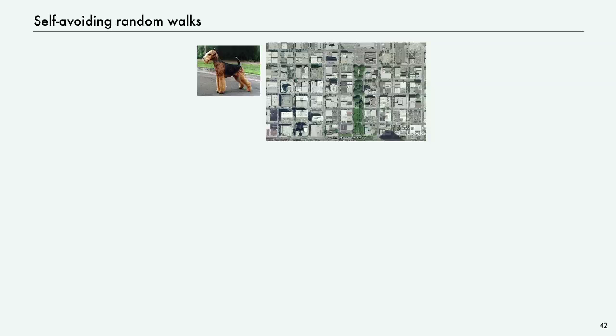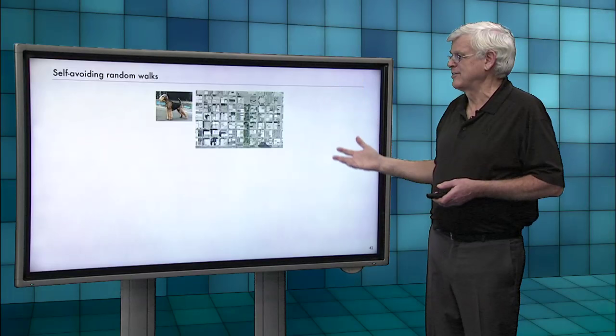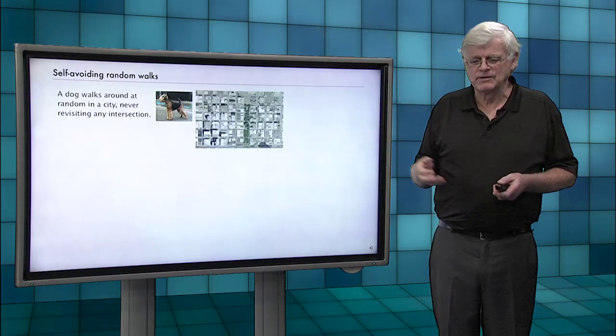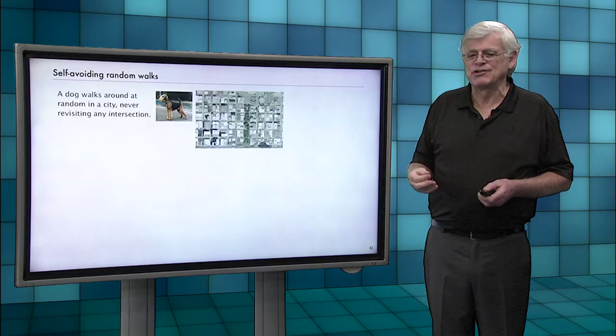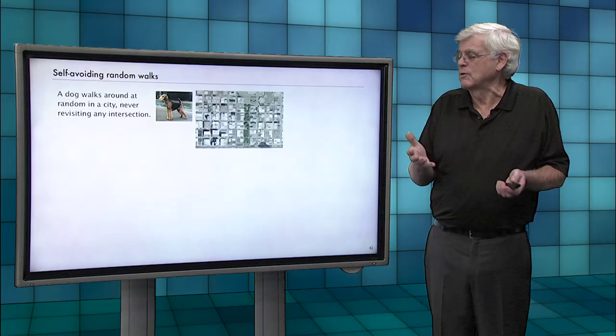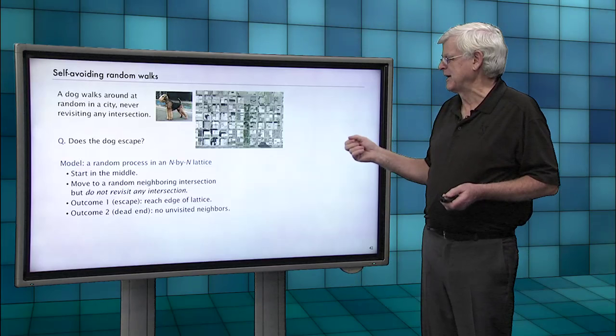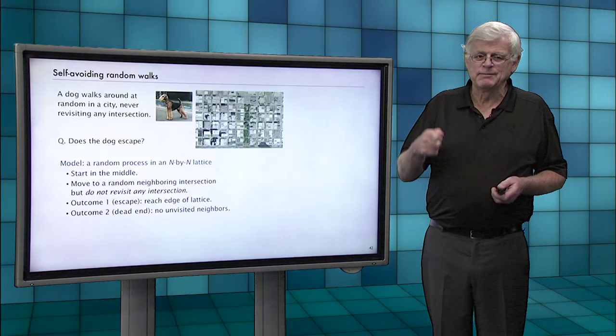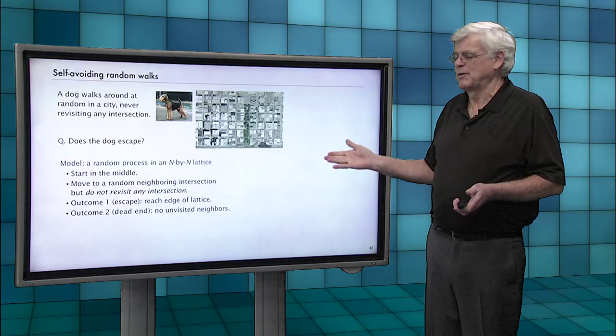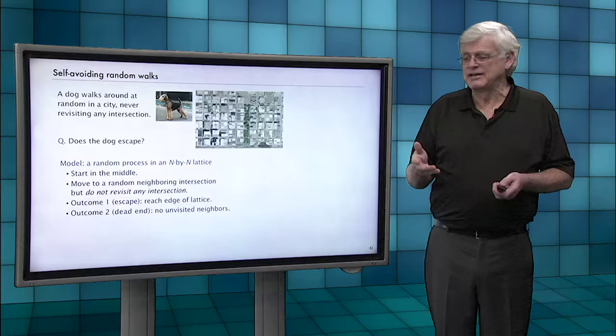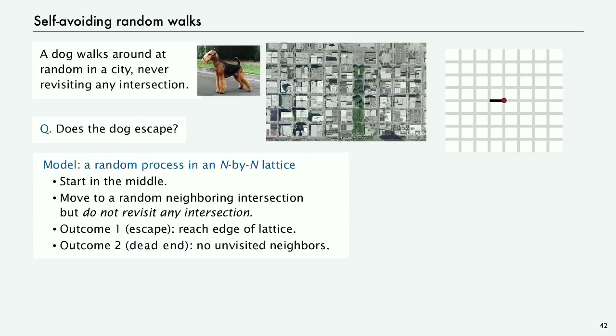So let's look at another simulation example. So here we imagine a dog that's lost and wandering around in a city that's all square city blocks. Being a dog, it's a waste of time to revisit any intersection and it can know when it's going to a place that it's been before and won't go there. So the question is, does the dog ever get out of the city or not? So what we're going to do is have a random process in an n by n lattice. We're going to start in the middle and we're going to move to a random neighboring intersection but never revisiting anywhere. And there's two possible things that can happen. One, you get out of the city, but the other is you get stuck in a dead end.